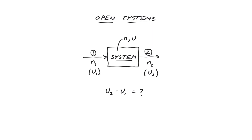Although on the surface this seems like a similar question to the closed system, it's actually quite different. The focus in a closed system is on the internal energy of the molecules inside the system. With open systems, we often don't care about the molecules inside the system — what we care about are the state of molecules entering or exiting. Also, the difference in internal energy we're trying to quantify is the difference between two different groups of molecules at the same moment in time, not the change with time of a single group. These differences have a profound impact on how we formulate the first law.